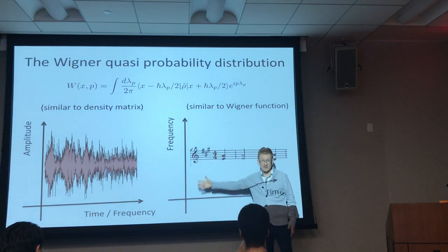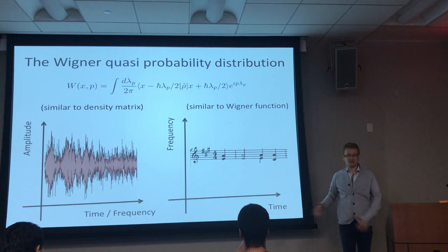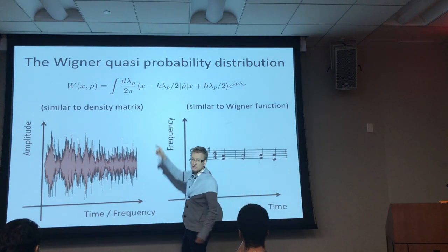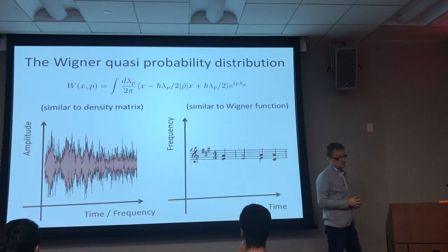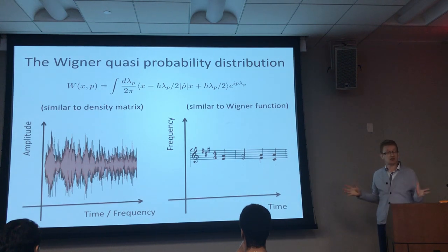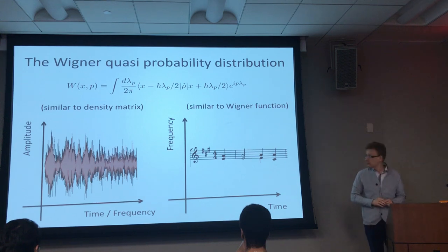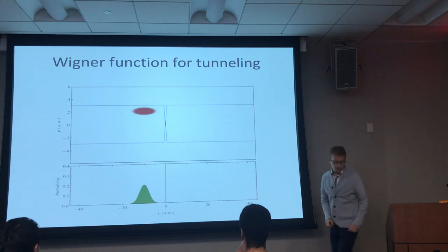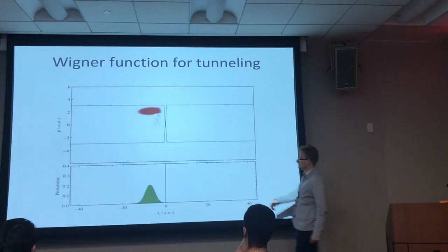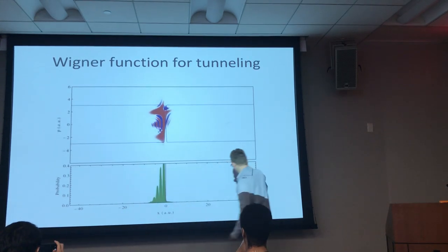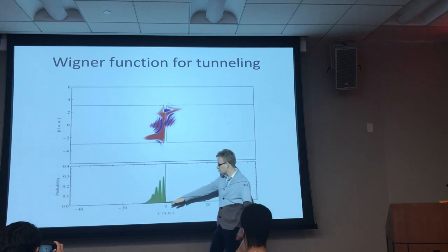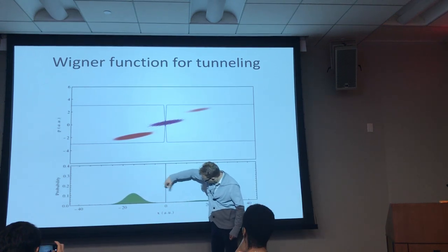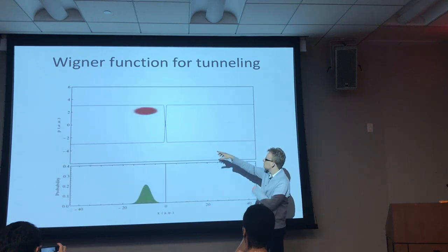This is how the Wigner function looks in phase space - p on one axis, x on the other. The bottom plot is the probability distribution as a function of position from the Schrödinger equation. There's a Gaussian barrier at the center. You see most of the wave packet bounces off and a little bit tunnels through. It's much more beautiful in the Wigner picture. The Wigner function is real but can be negative. We can draw a boundary between classically allowed and classically forbidden regions of phase space.